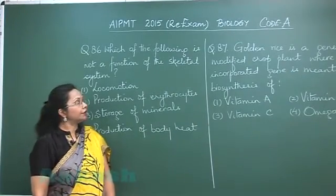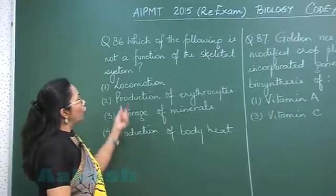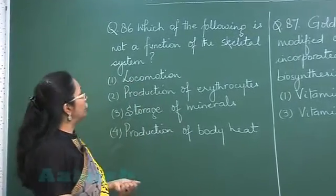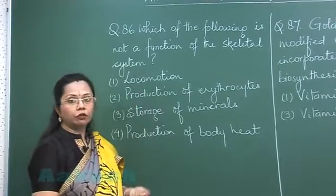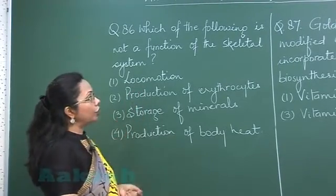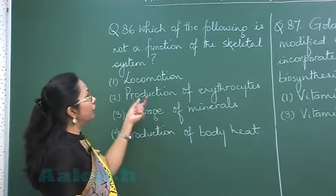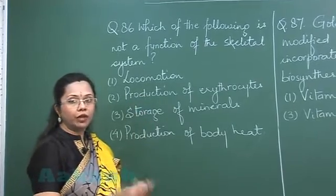Question number 86: Which of the following is not a function of the skeletal system? Locomotion is one of the primary functions. Production of erythrocytes—we know within the bones there is red bone marrow, which